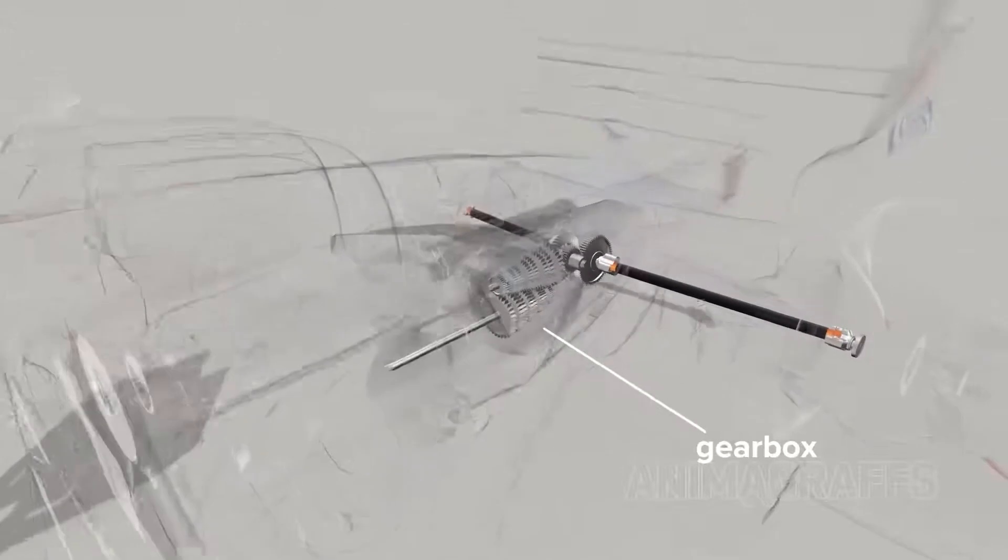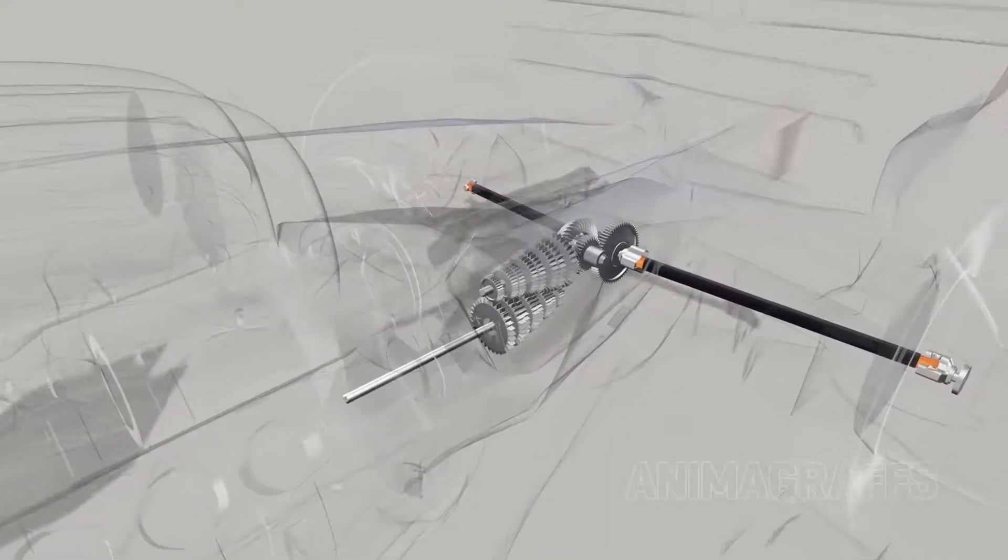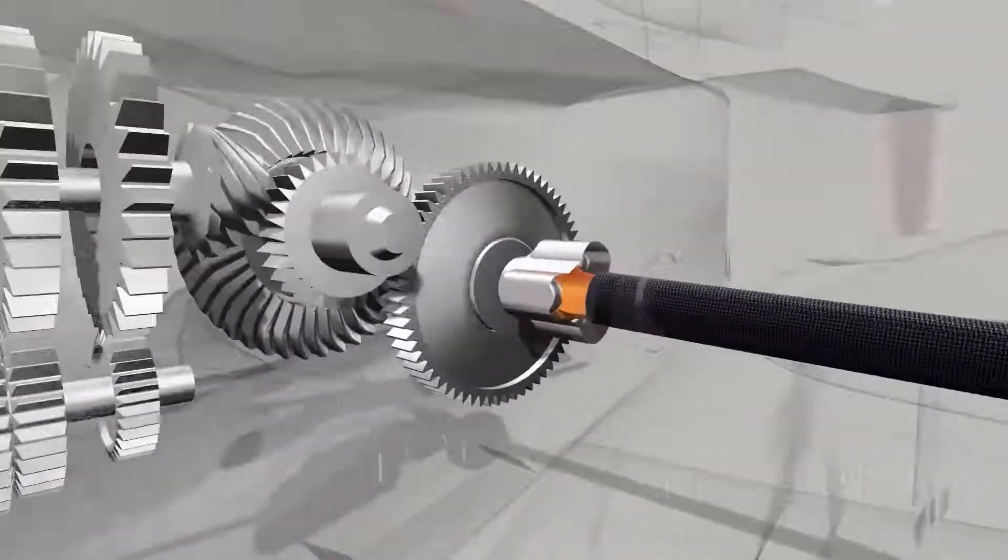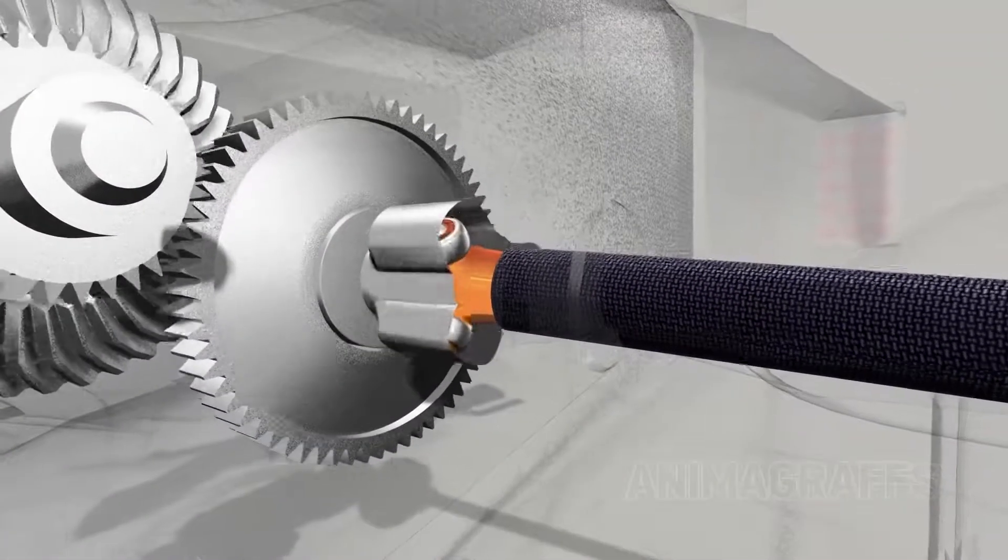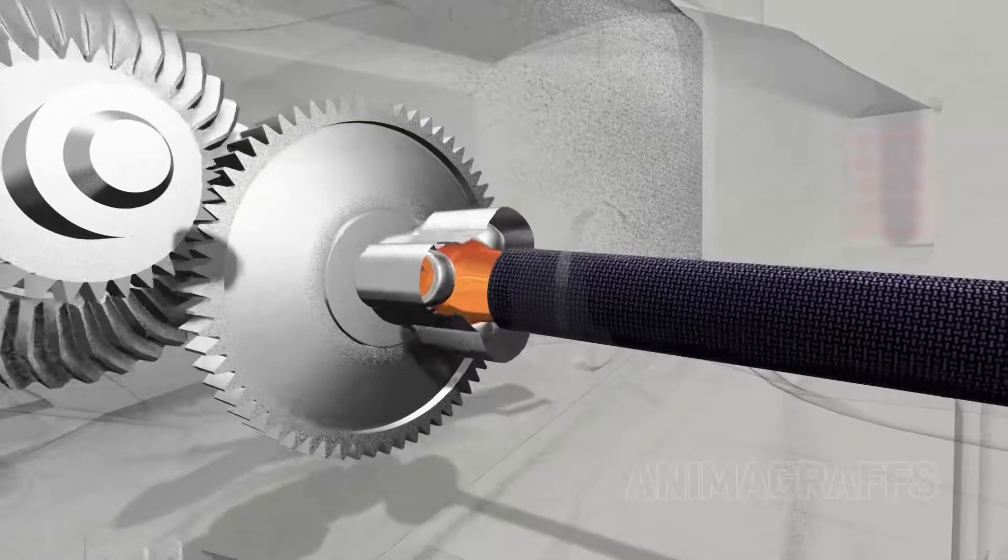The 8-speed gearbox, 7 forward plus 1 reverse, sits behind the engine in its own aluminum cartridge. The rear differential gears connect to rear axles with special tripod joints that allow spinning axles to tilt with the rear suspension movement.